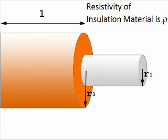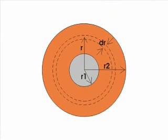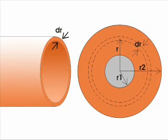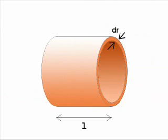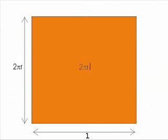Let an elementary cylindrical section of insulation of radius R and thickness DR. Now the length through which the leakage current will flow is DR and area of cross section is 2πRL.